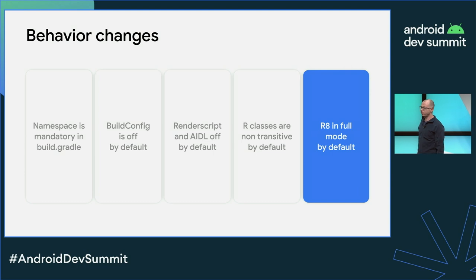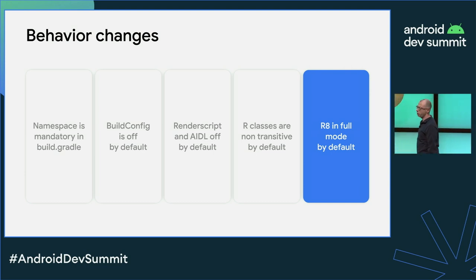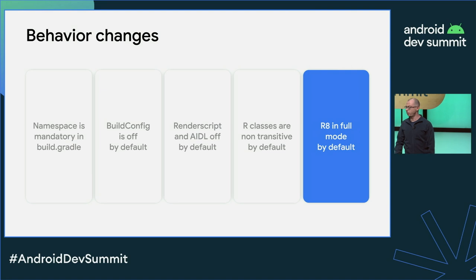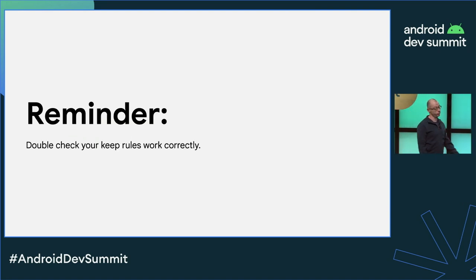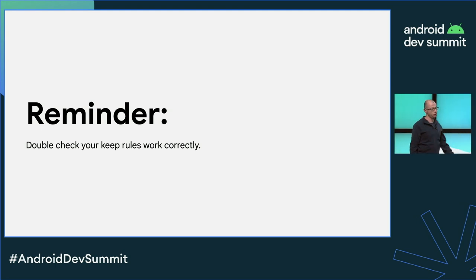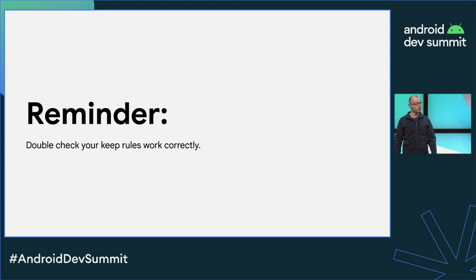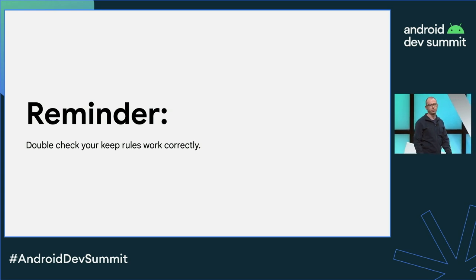The last behavior change: R8 is now in full mode by default, enabling even more optimizations. If your keep rules were configured correctly, there is no action needed. However, you might need to double-check that your project builds correctly with the new optimizations enabled.